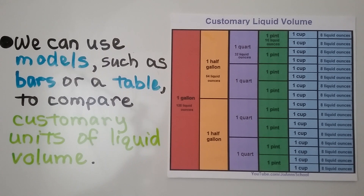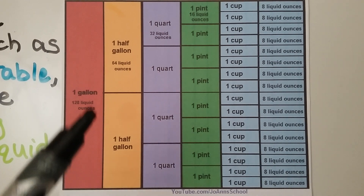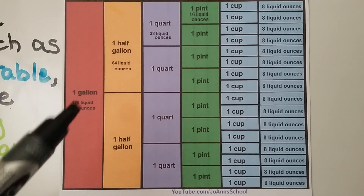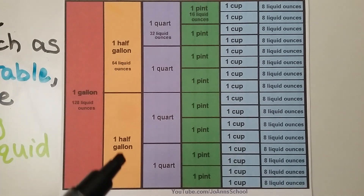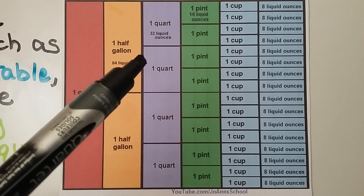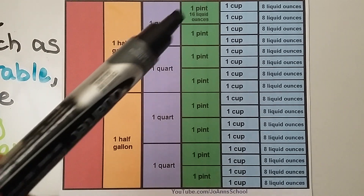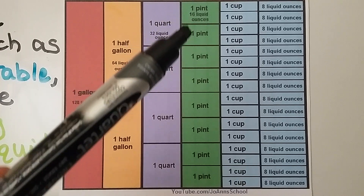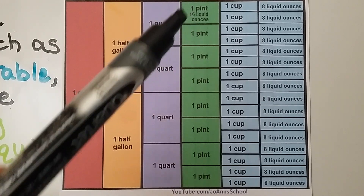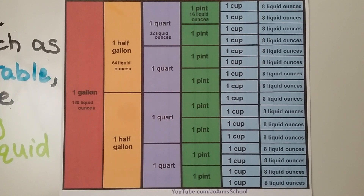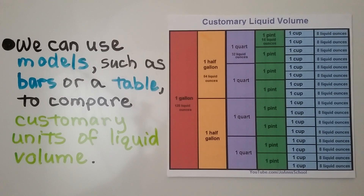Let's start with the largest unit. A gallon is 128 liquid ounces. If you split the gallon in half, you'll have two half gallons, each 64 liquid ounces. Split a half gallon in half and you get two quarts, each 32 liquid ounces. Split a quart in half and you get two pints, each 16 liquid ounces. Split a pint in half and you get two cups, each eight liquid ounces.